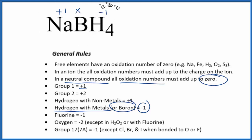We know that if we add all these up, they should equal zero. So we have 1 + X - 1 times 4, because we have four hydrogens here. That equals zero. So X - 3 = 0, and X equals +3.